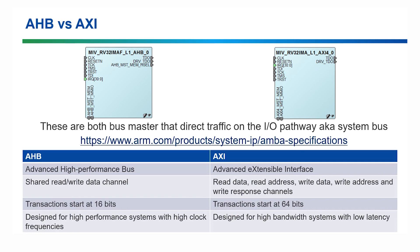AHB stands for Advanced High Performance Bus. It has a shared read and write channel, with transactions starting at 16 bits. It was designed for systems with high performance and high clock frequencies. AXI stands for Advanced Extensible Interface. It has read data, read address, write data, write address, and write response channels, with transactions starting at 64 bits. It was designed for high bandwidth systems with low latency.